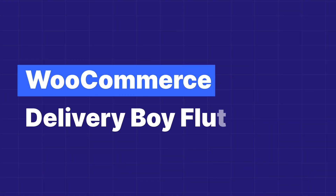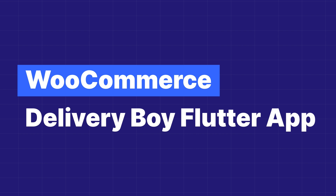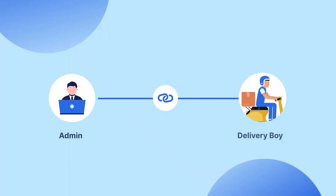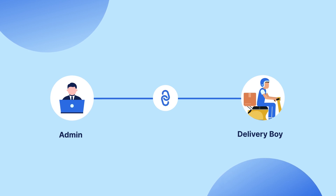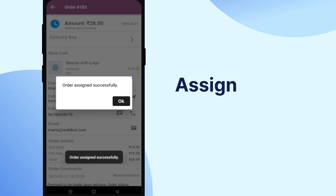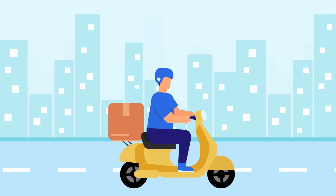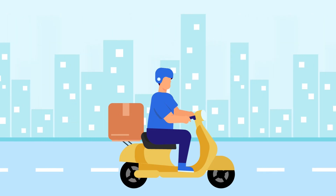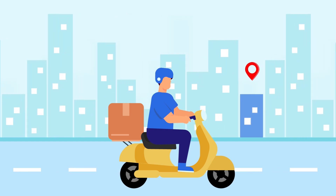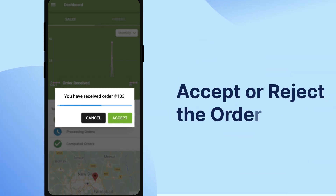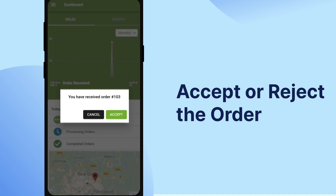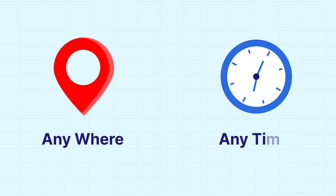Welcome back to our new video tutorial of WooCommerce Delivery Boy application. This app has been built using the latest technology, Flutter. It creates a link between the admin and the Delivery Boy. The admin can assign a particular order to a particular Delivery Boy, and the Delivery Boy can proceed with the further process by delivering that order to the customer, and can also accept or reject the order via the same application on an Android device, from anywhere and anytime.